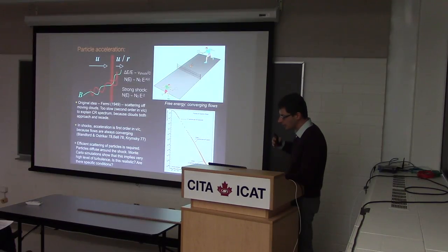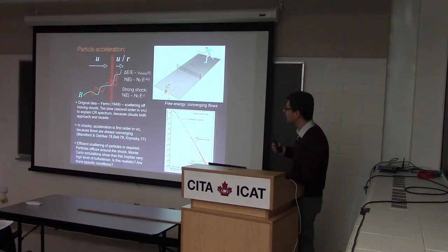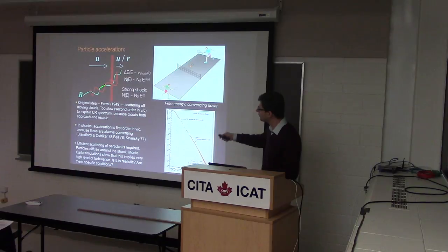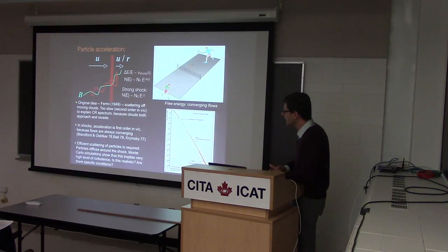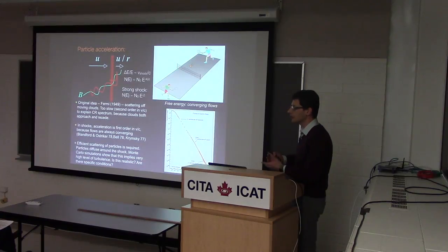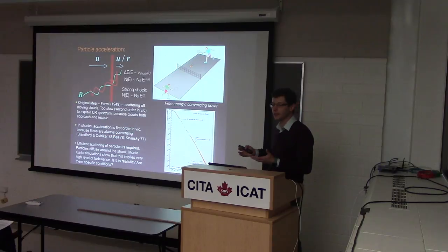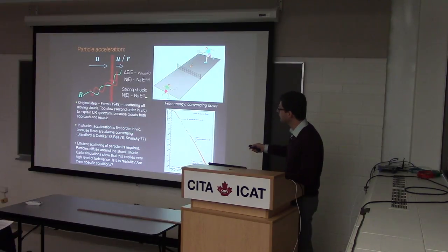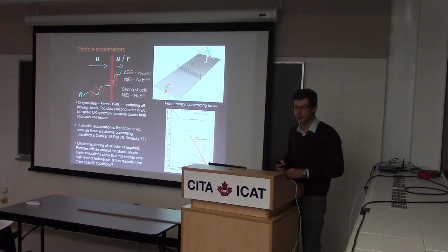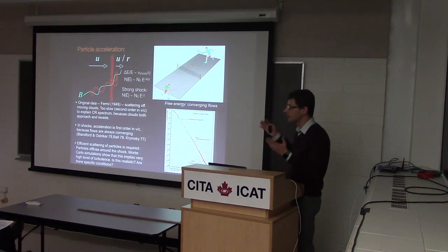The model assumes that particles can scatter off magnetic field fluctuations, which brings them back across the shock. The existence of these fluctuations at the right level is not guaranteed. Also, it's not clear how many particles actually participate. In principle this theory can predict the power law shape, but it cannot predict the normalization — some shocks could have zero as a prefactor.